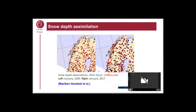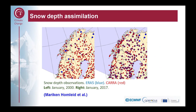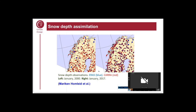We are also assimilating snow depth data from Scandinavia. As you can see, there are many more snow depth data in the Copernicus Arctic Reanalysis project than in ERA5. We're not doing this everywhere because it requires a dense snow depth observation network — if you don't have snow depth observations on mountains, you could actually cause damage by assimilating lowland snow depths. But we do apply it here in Scandinavia.